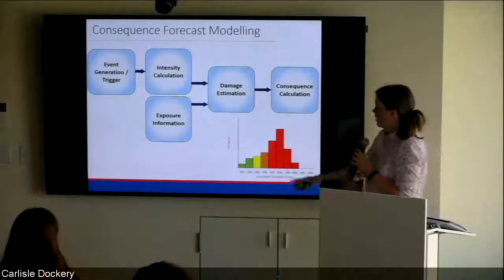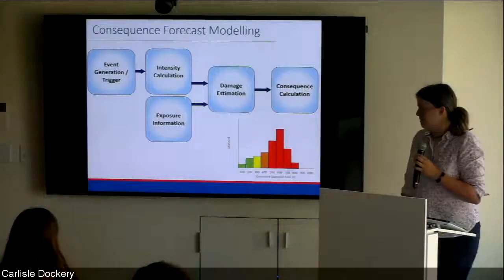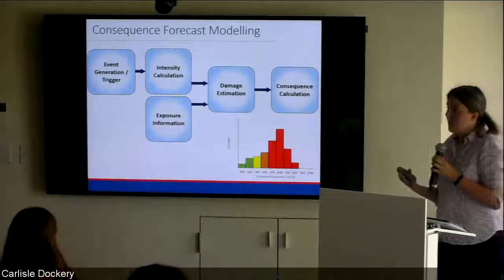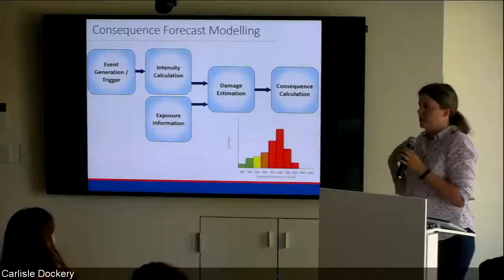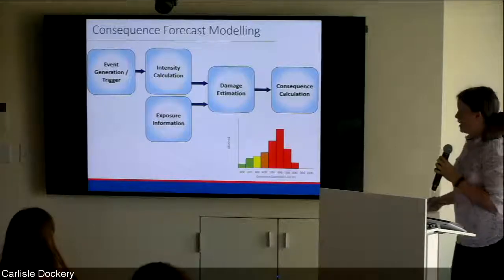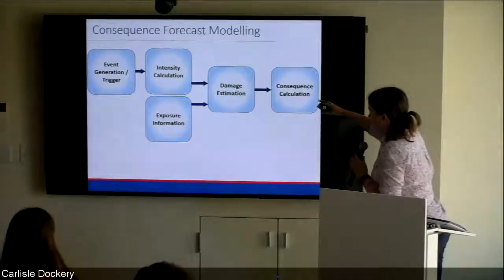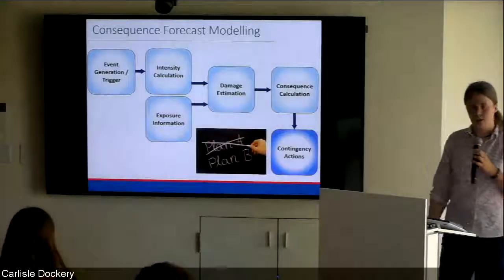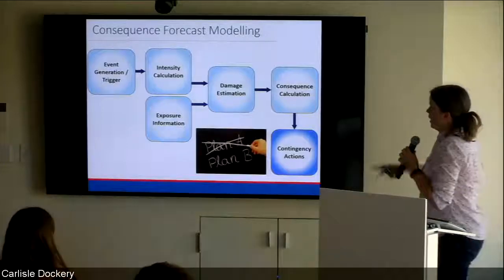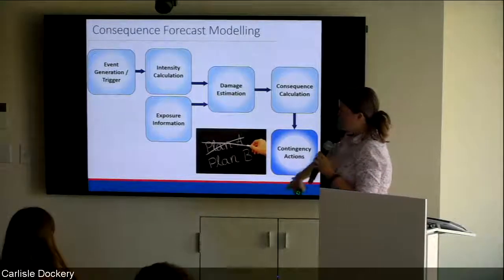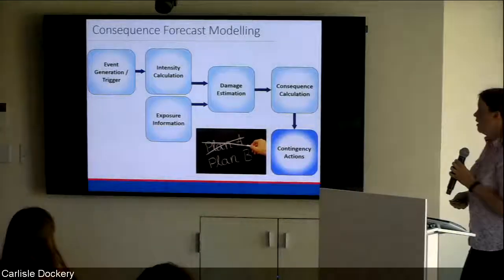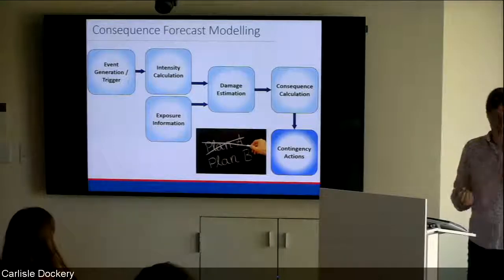From the damage you can track this through the systems analysis to work out the consequences - whether that's estimated economic cost, the number of people without power, or the diversion route you've had to take. We then bring it down and you can take various contingency actions to try to mitigate that. We've also added a feedback loop so if you've taken contingency actions, you can work it back through the model and keep going around until you get consequences that are acceptable.